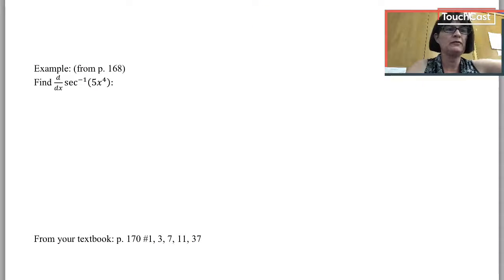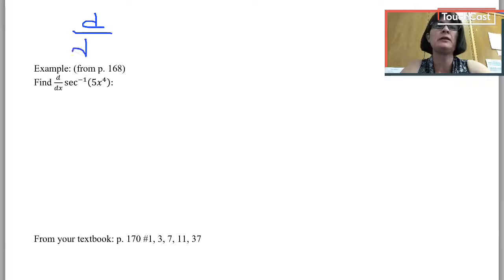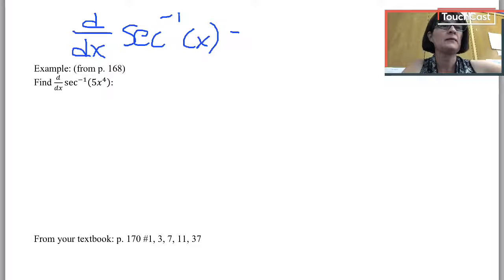So I need the derivative now of inverse secant of 5x to the 4th. I'll change to blue here. Let's write down what I know, which is the derivative with respect to x of inverse secant of u. So in this case, my u is 1 over the absolute value of u times the square root of u squared minus 1.